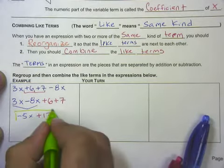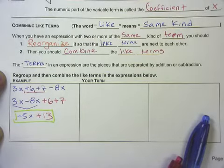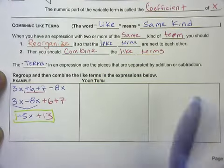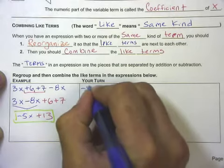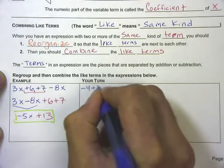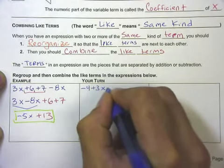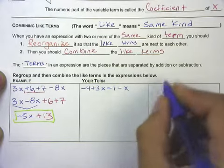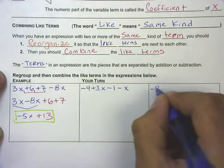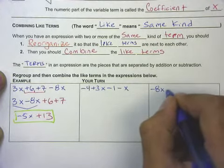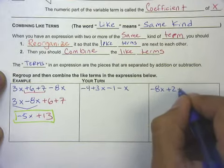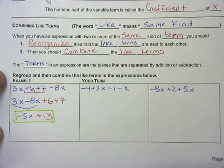Do me a favor real quick and try these next two problems on your own. You've got negative 4 plus 3x minus 1 minus x, and negative 8x plus 2 plus 5x. Do those on your own.